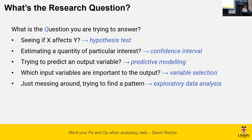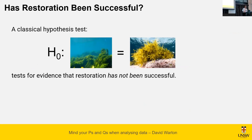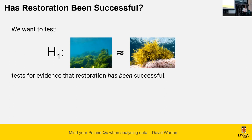Looking at the question 'has restoration been successful,' it doesn't naturally fit into any of those common approaches. It's closest to hypothesis testing, but we're not saying 'does this affect that' — we're saying 'is this like that?' That's a slightly different problem. A classical hypothesis test would set a null hypothesis that this equals that and look for evidence of difference. That's not what we want — we want to flip it and say 'do we have evidence that this is similar to that?'